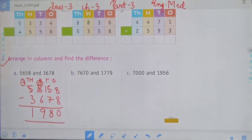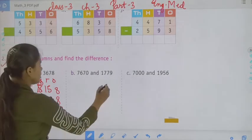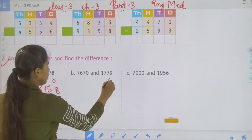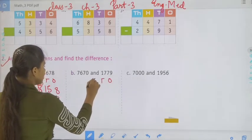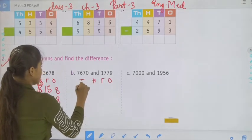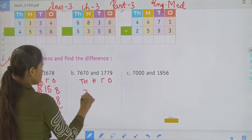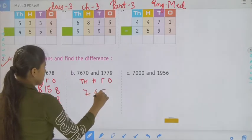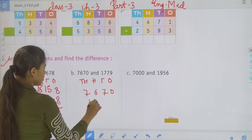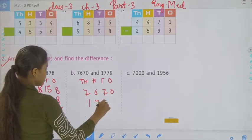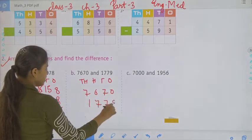Now move to the next. Again we have to write 1s, 10s, 100, 1000. That is 7,670, then 1,779.